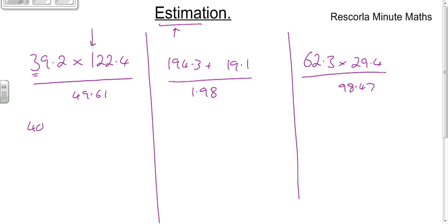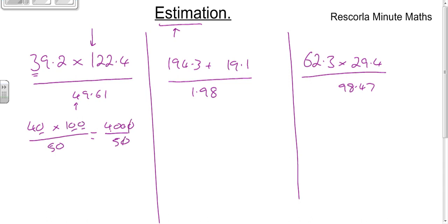The second number is in the hundreds, so you round to the nearest hundred. So that's 40 times 100. The one underneath is in the tens column — the biggest number — so you round to the nearest ten, giving 50. That's one mark for getting two out of three bits correct. 40 times 100: 4 times 1 is 4, with three zeros, so that's 4,000. 4,000 divided by 50 — knock a zero off — 400 divided by 5 equals 80.